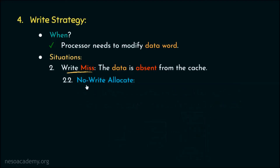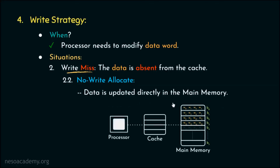The second write miss strategy is no write allocate, where the data is updated directly in main memory without involving the cache. If the processor needs to modify a data word of block number 1, it updates that word directly in main memory. So for write miss: write allocate first brings data into cache then performs write back, while no write allocate directly updates main memory.